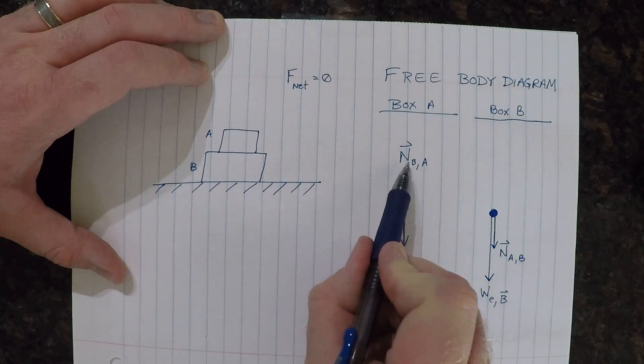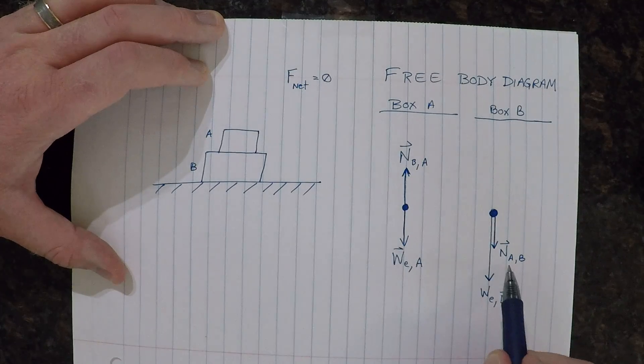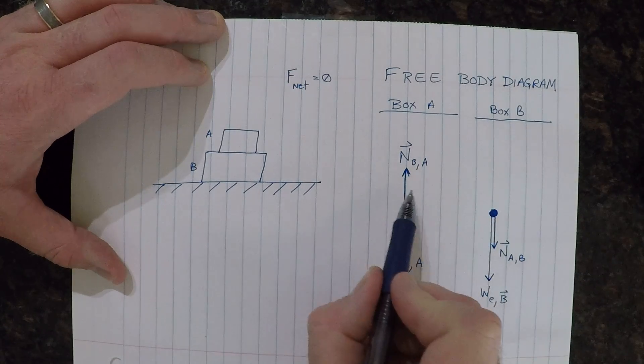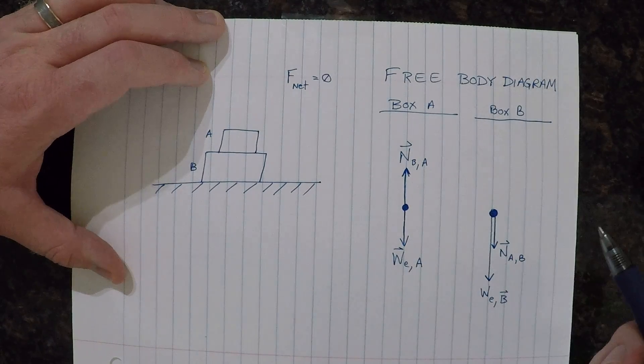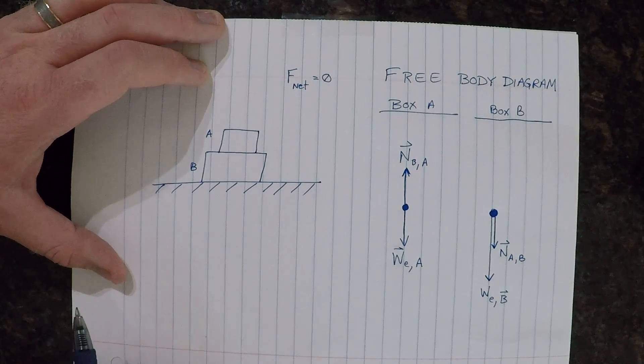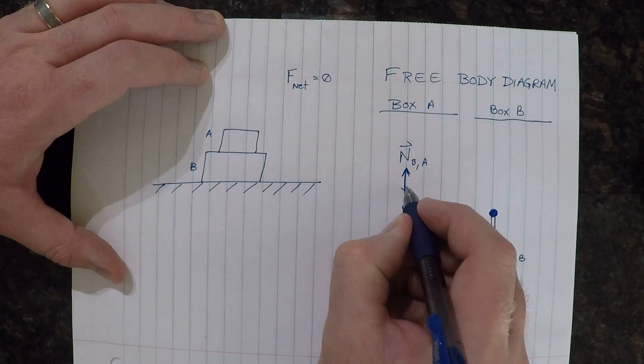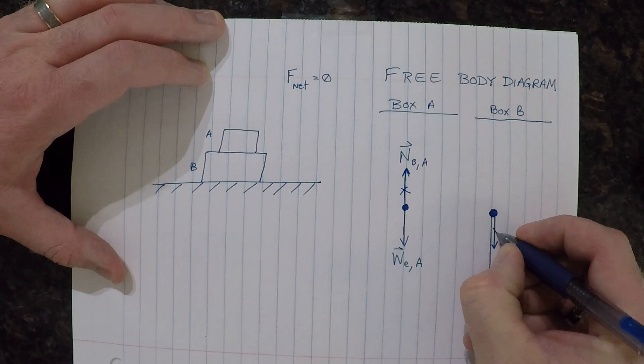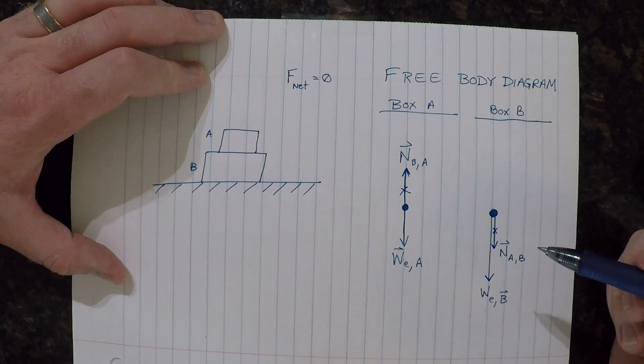Notice that they're both normal force, but I've just switched the indices. B on A, A on B. And notice that they are in two different diagrams. You'll never have a third law pair, that is a pair of forces that are due to Newton's third law, in the same diagram. I'm going to mark these as being a pair by just writing a little x on this one and a little x on that one to show that they correspond to each other.